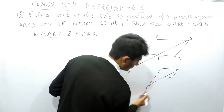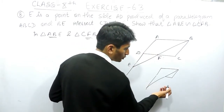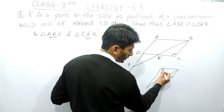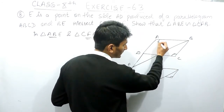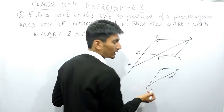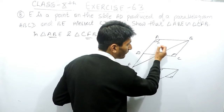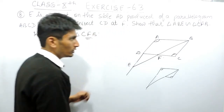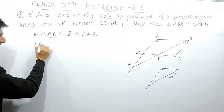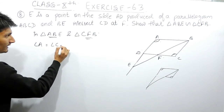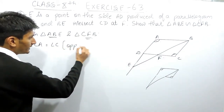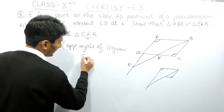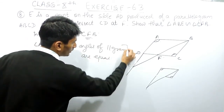These two triangles must look like this. This angle of this triangle must be equal to this angle of this triangle, because these two angles are the opposite angles of a parallelogram. We know that opposite angles in a parallelogram are equal, so angle A equals angle C.